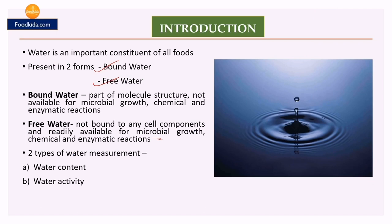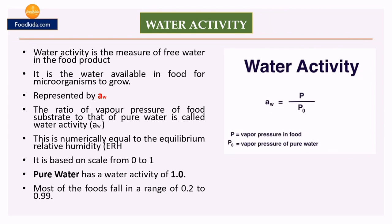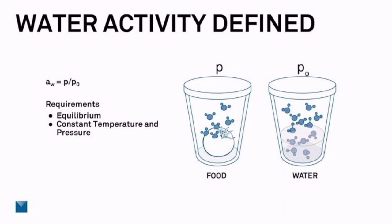We can measure water in two ways: in the form of water content and in the form of water activity. Water activity is one of the critical measurements in terms of food safety. It is the measure of free water in a food product that is readily available for microorganisms to grow. It is represented by Aw and expressed by the formula Aw = P/P₀, where P is the vapor pressure of the food and P₀ is the vapor pressure of pure water. Water activity is thus defined as the ratio of the vapor pressure of a food substrate to that of pure water.